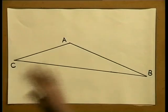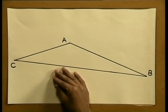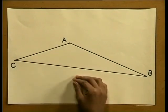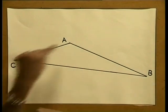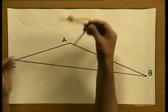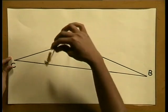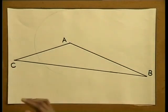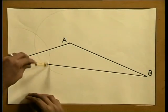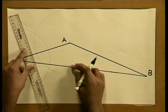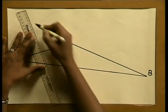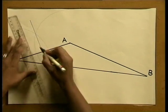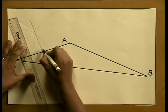Now let's see if we can construct any other lines in our scalene triangles. Instead of bisecting angles, what about bisecting the sides of the triangle? Let's use our pair of compasses to find the midpoint of line segment AC. I place my compass point at A and draw an arc, then place the compass point at C and draw another arc. I construct a line through the points where the two arcs intersect, passing through the midpoint of line AC. I will mark this midpoint as point M.